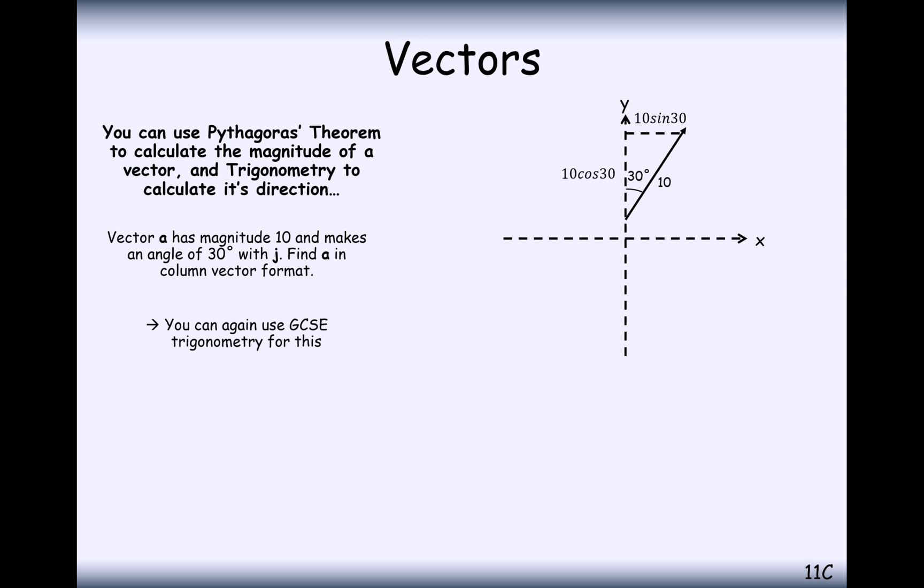Now we just need to work out the adjacent and the opposite. So in this case here, we get 5 and 5 root 3. So here is the column vector format of the vector, 5 over 5 root 3.